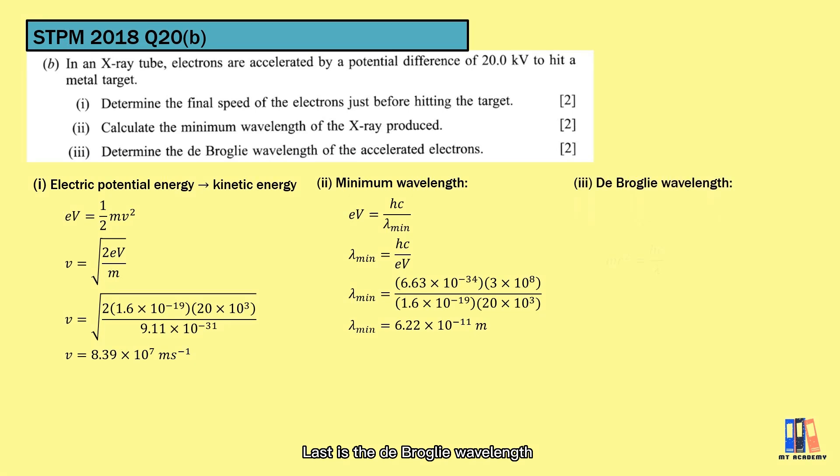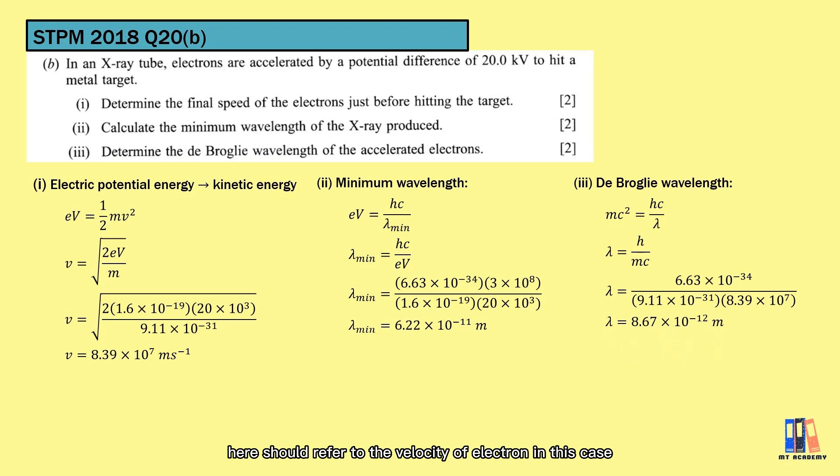Last is the de Broglie wavelength. If you don't remember the formula, you should at least remember the derivation by taking the Einstein equation, E equal to mc squared equal to hc over lambda. So notice the velocity here should refer to the velocity of the electron in this case, not the velocity of the photon.